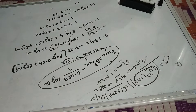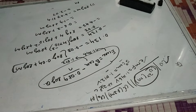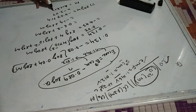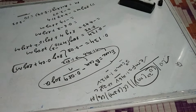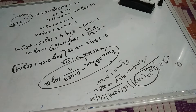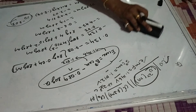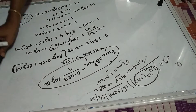So log M = minus 3.07, which means M is the antilog of minus 3.07, that is 10 to the power minus 3.07. So the concentration of Cu²⁺ that we are getting is 10^(−3.07). This is the method to calculate the concentration of an unknown solution.